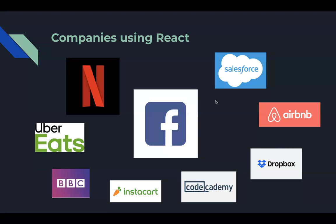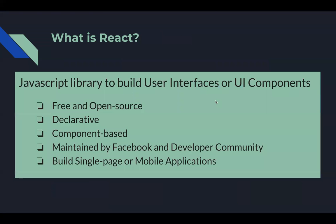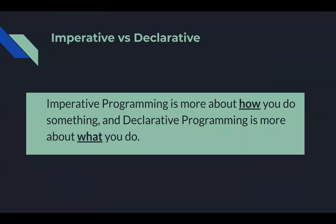Going back to one of our earlier slides, we see that React is declarative. What does that mean? When you say that something is declarative, there is certainly something else that is not declarative — that is imperative. So there are two styles of programming: one is declarative and one is imperative. With imperative programming, it is more about how you do something. With a declarative programming style, on the other hand, it is more about what you do.